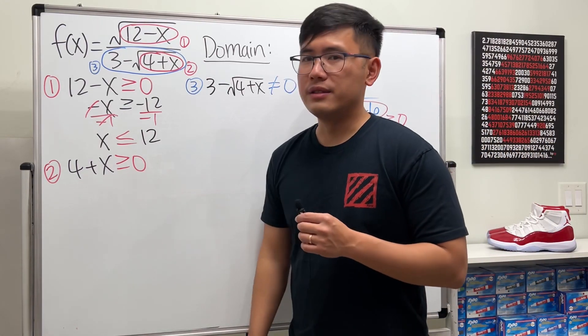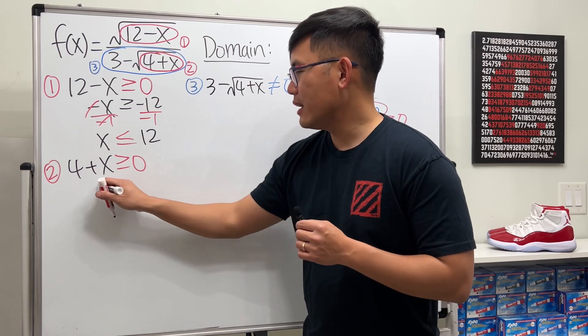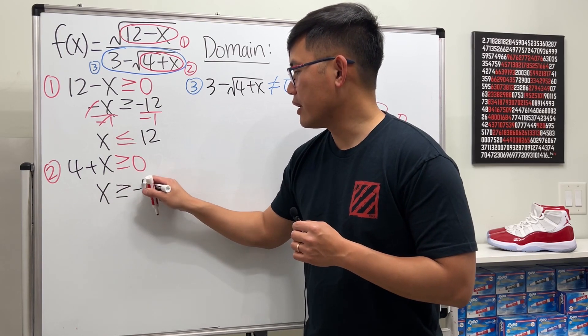Next, 4 plus x is greater than zero. Move the 4 to the other side. x is greater than or equal to negative 4.